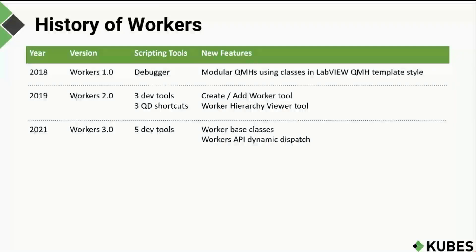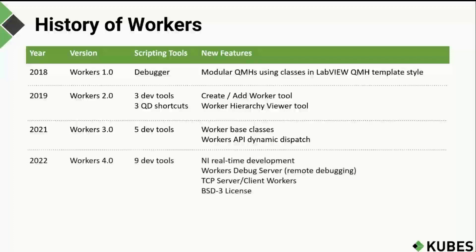In 2022, we are at version 4, released this year in July. There are now a total of nine dev tools, and the possibility to develop and deploy Workers on NI real-time targets. The Workers debugger from previous versions is now called the Workers Debug Server and allows you to debug and observe your Workers applications remotely. TCP server and client workers were added to the worker plugin library, and the licensing model changed to the BSD3 open source license.